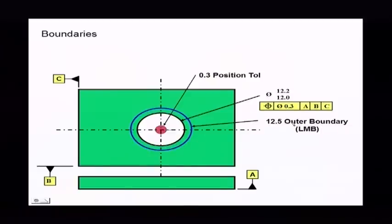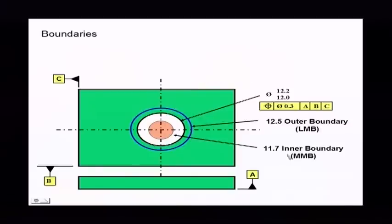In the 1994 standard, they call that an outer boundary. But now they've given it another name in the 2009 standard, the LMB or the least material boundary. So now you have two things here. We always had the inner and outer boundaries—that hasn't changed. But now they added new terms, the least material boundary and the maximum material boundary.